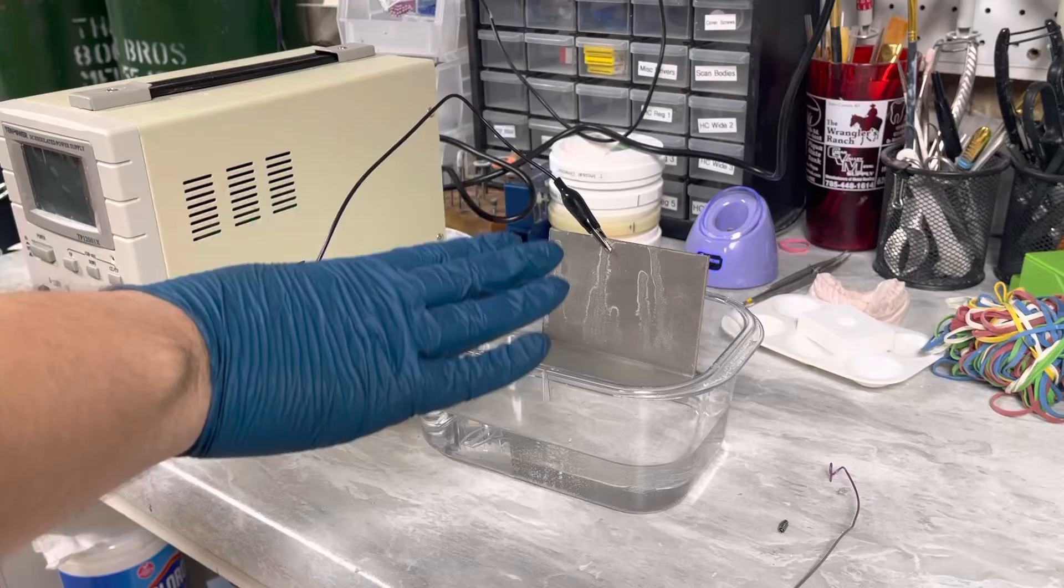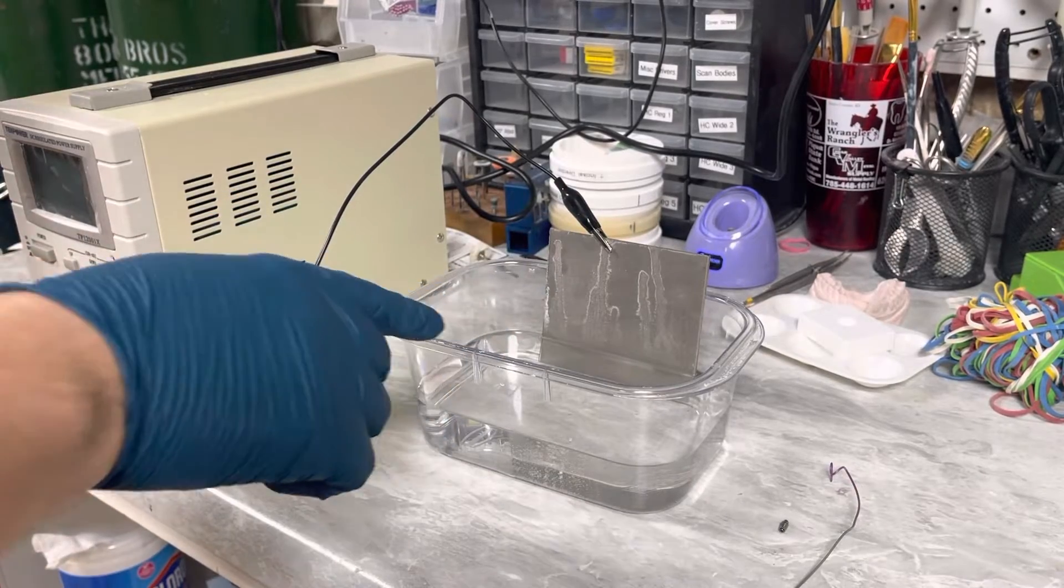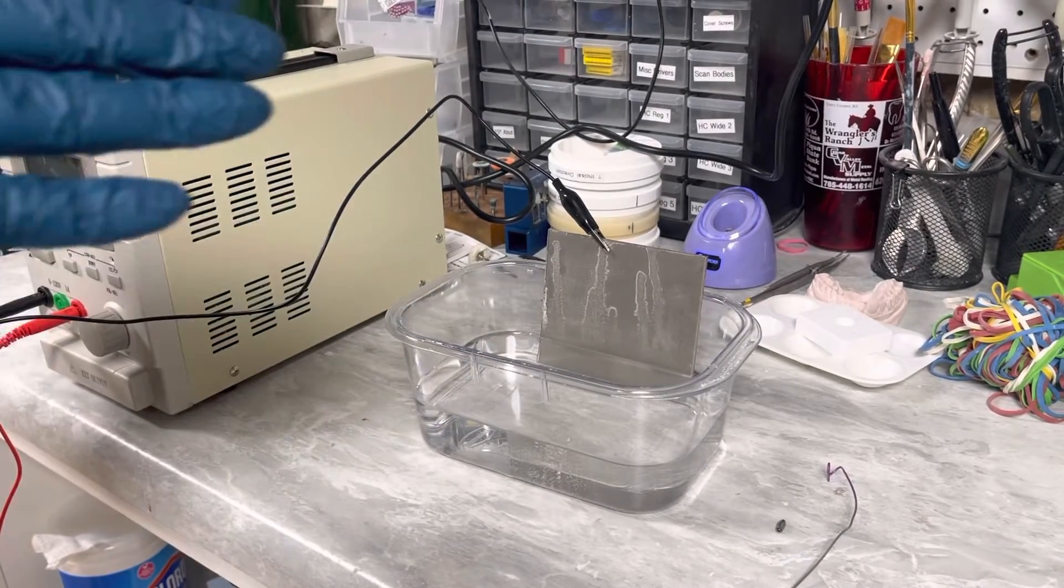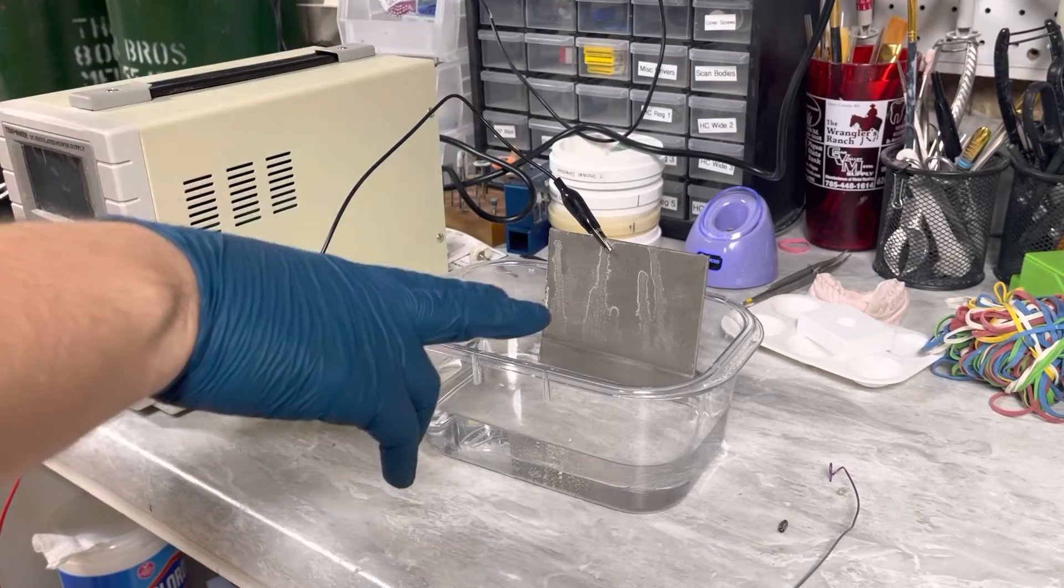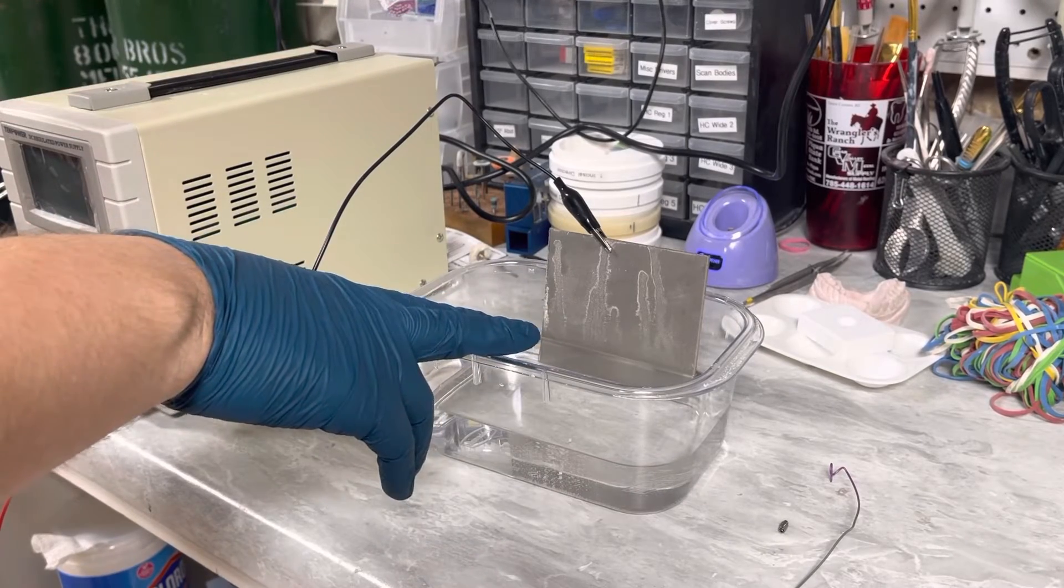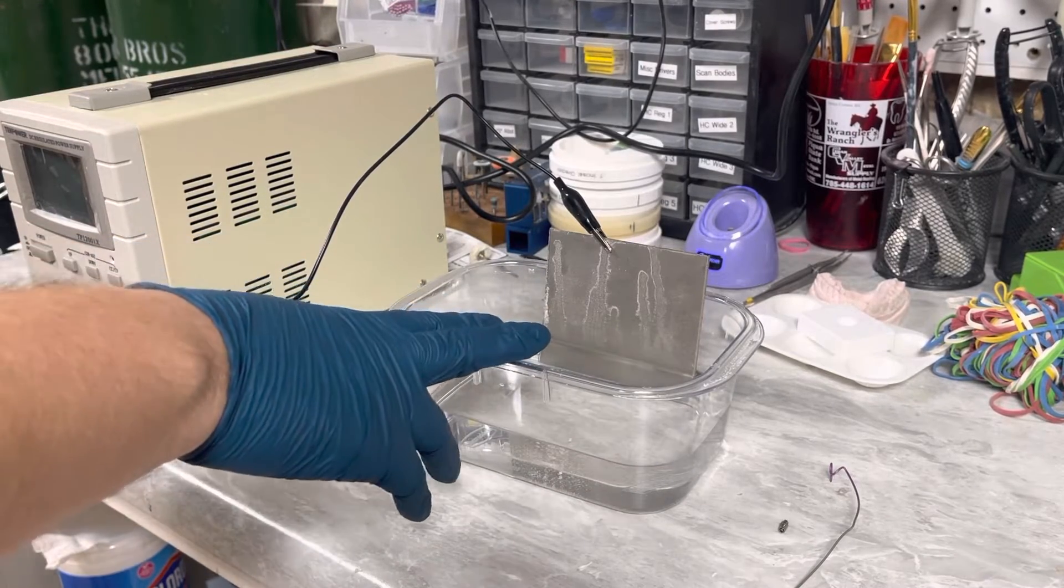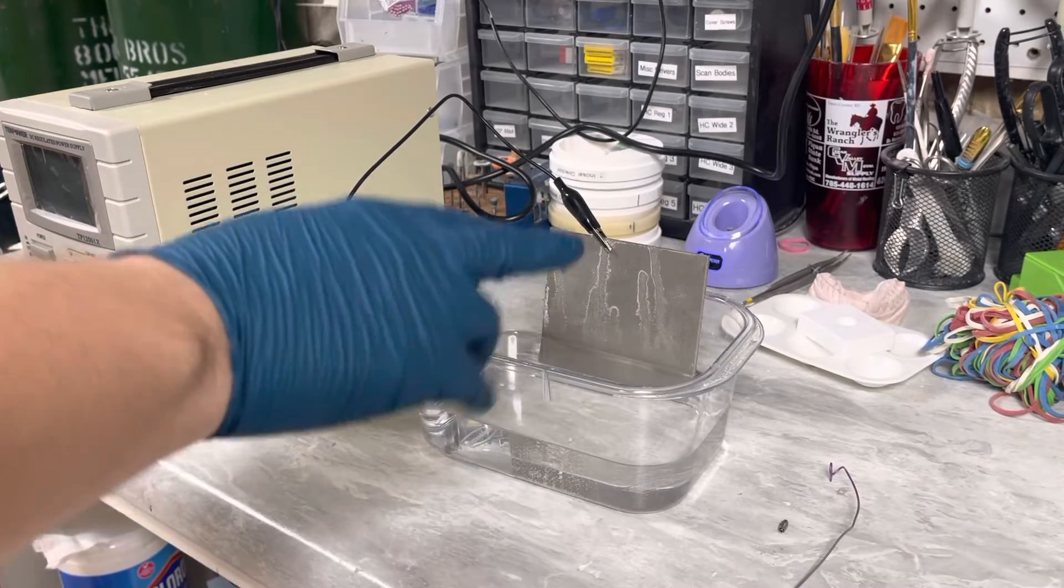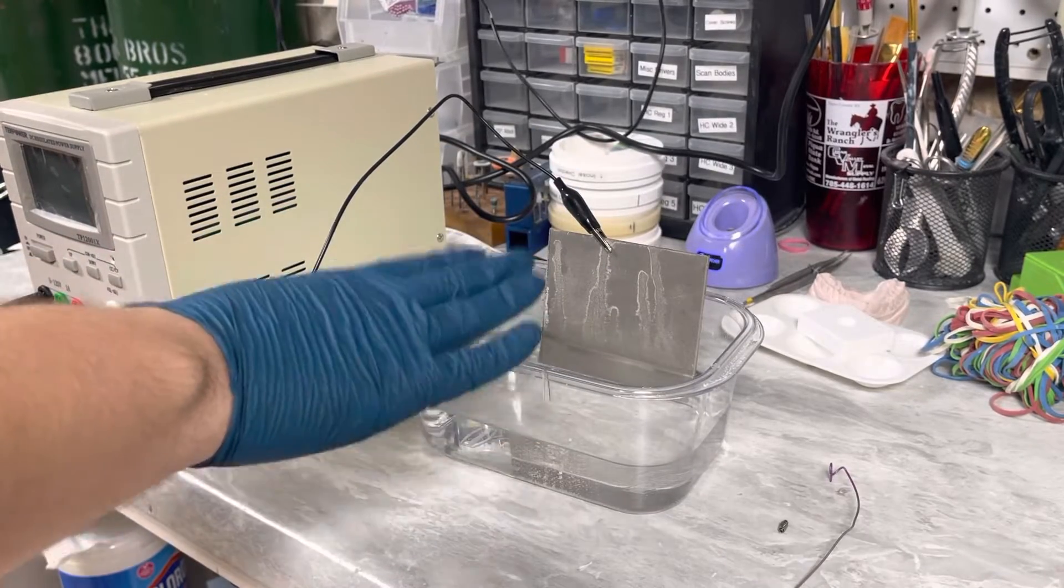First thing first, you need a container with an electrolyte solution. So I just use water and I put about a quarter cup of baking soda in it and dissolved it, and so I made a basic electrolyte solution there.